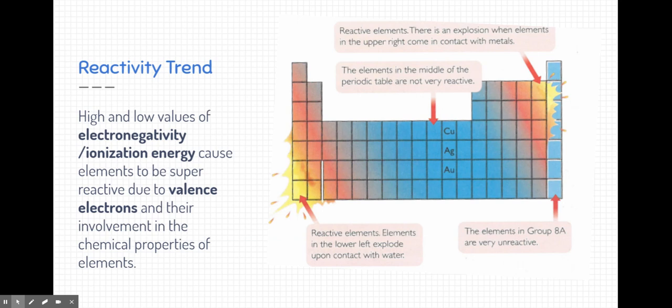Elements in group 18, the noble gases, don't react because they're full of electrons. They have eight outer shell electrons, and that's really important.